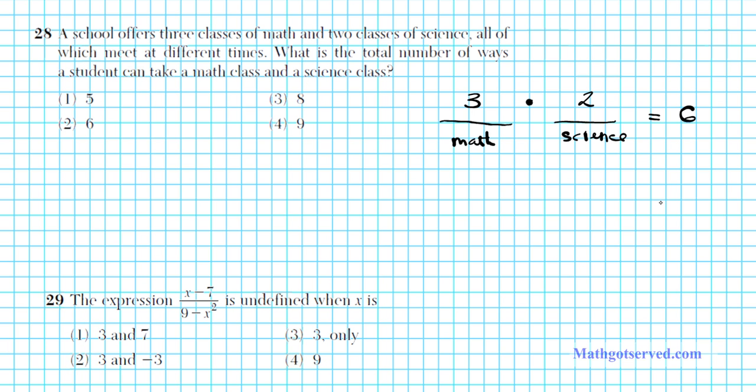This is just one way of doing the problem. Another way you can do this is just by using a probability tree, which is a little bit longer. So you say, there are three math classes. How about we call them M1, M2, or M3? After taking a math class, you have two choices of science classes. You have science one or science two.